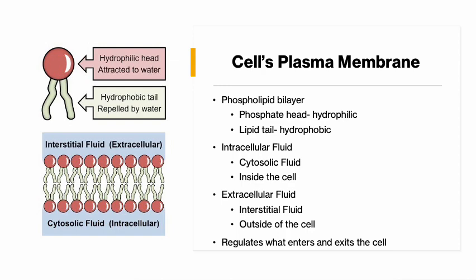The cell's plasma membrane is a phospholipid bilayer, meaning it's two layers of phospholipids. A phospholipid is a molecule with a phosphate head and a lipid tail. Phosphates are hydrophilic and lipids are hydrophobic. On either side of the cell there is fluid — intracellular fluid on the inside and extracellular fluid on the outside. Both of these fluids contain water.